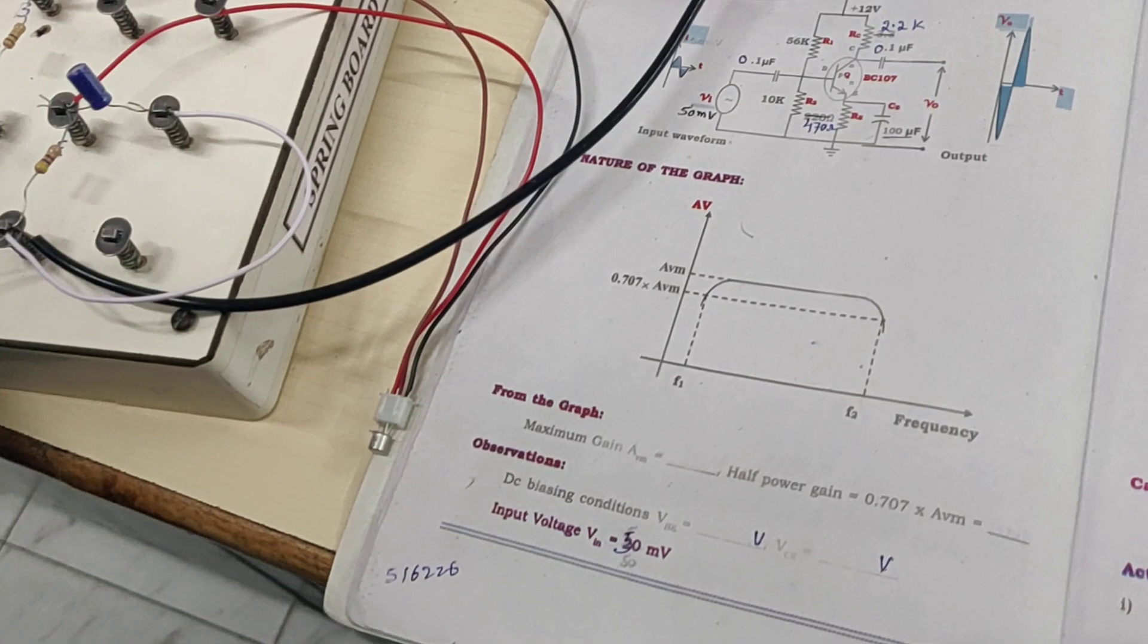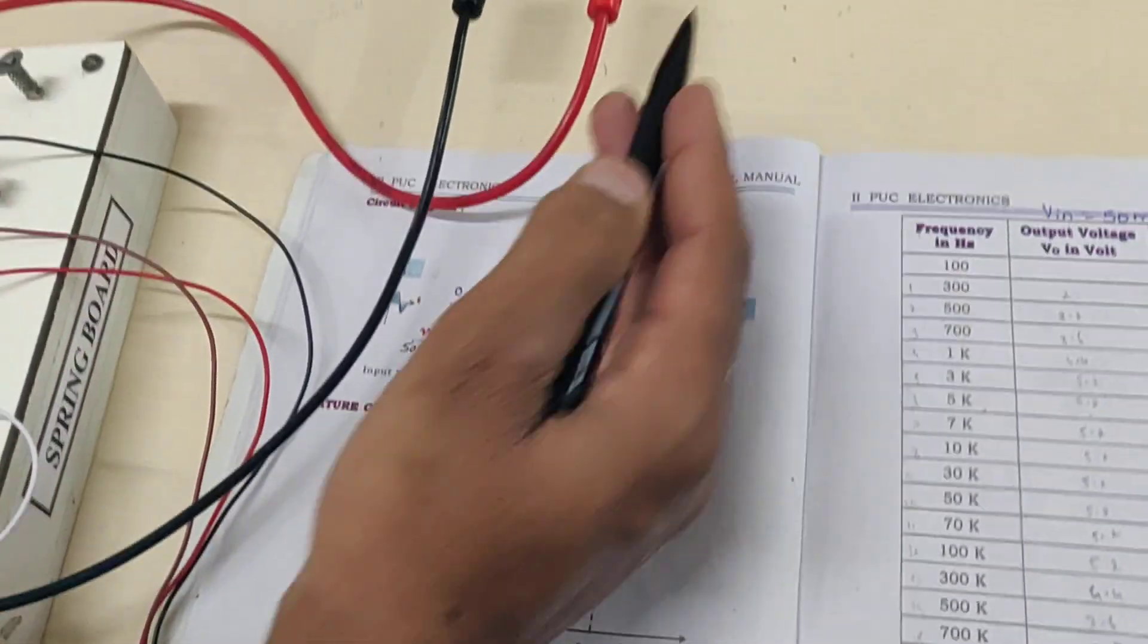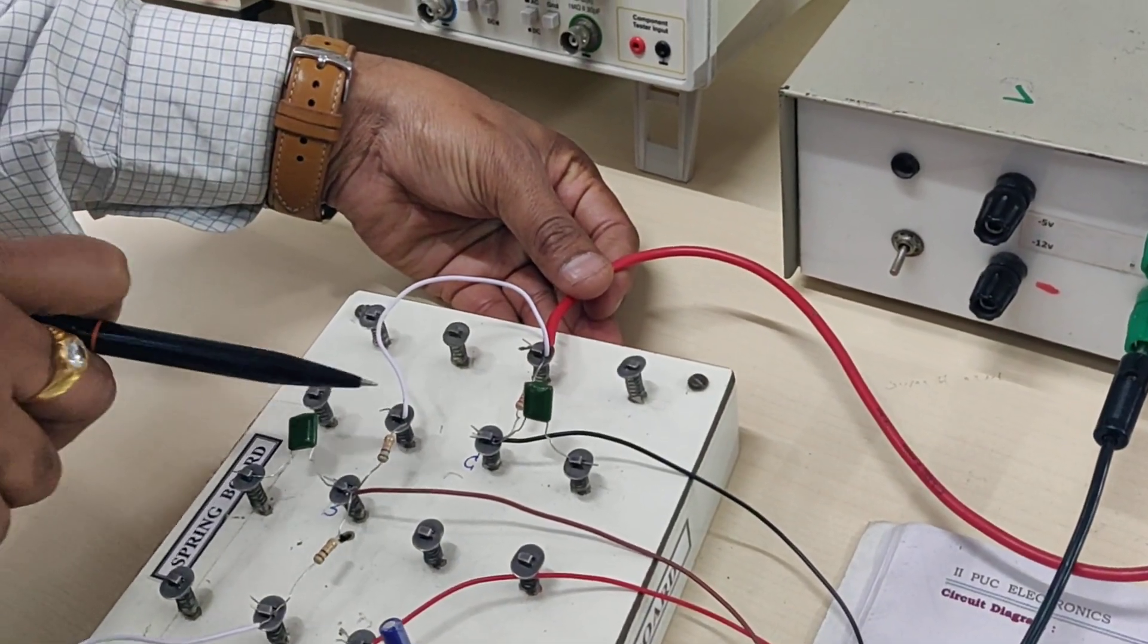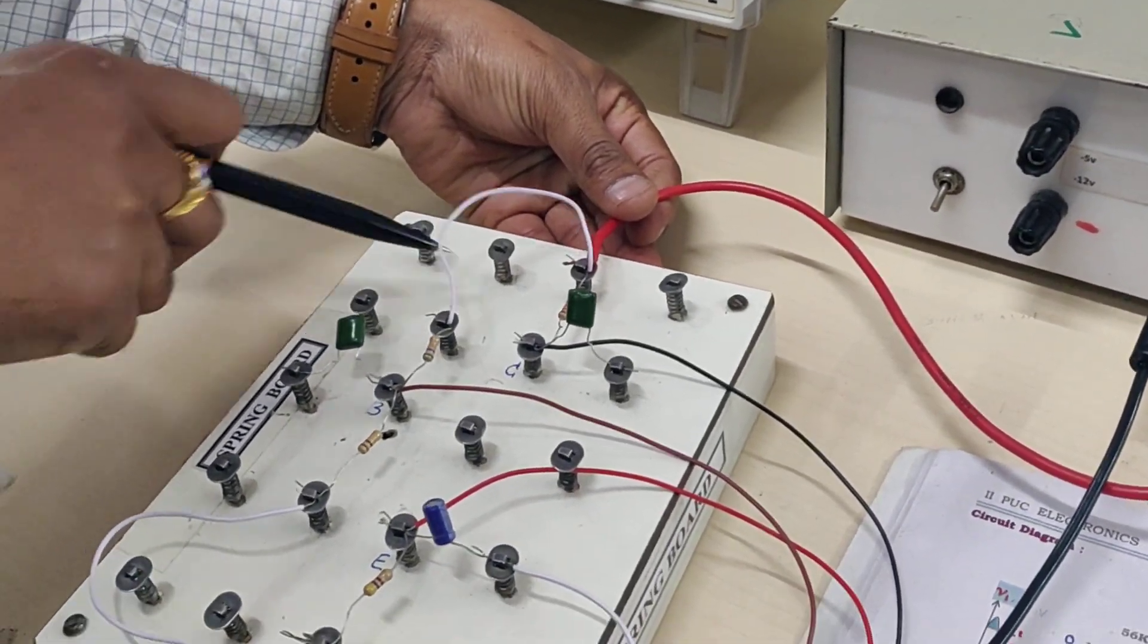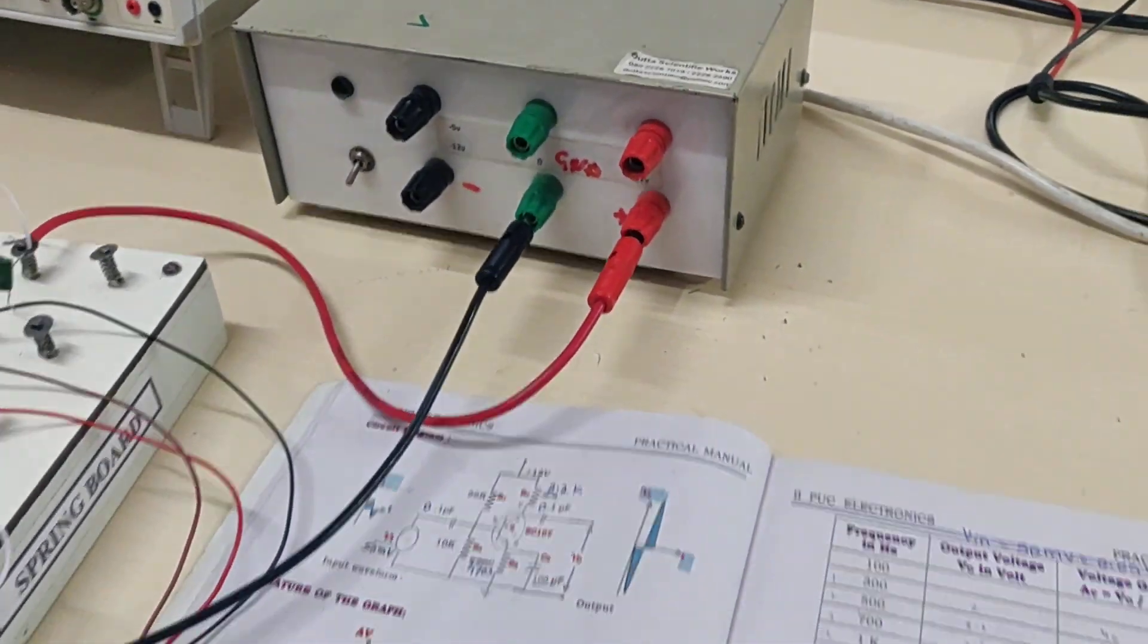These two are shorted and connected to the negative. The collector resistor's other end and R1 resistor's other end are both connected together, going to the positive of the supply. Now we shall connect.